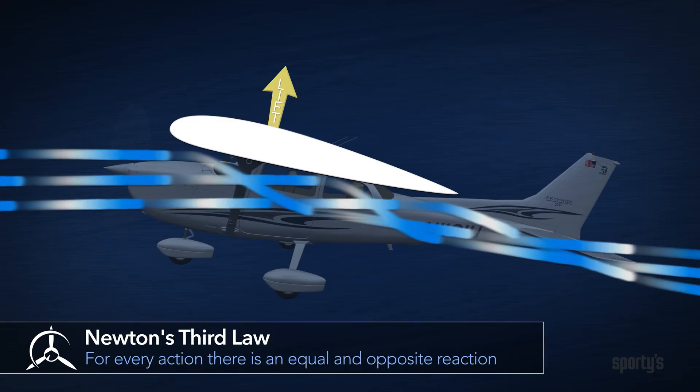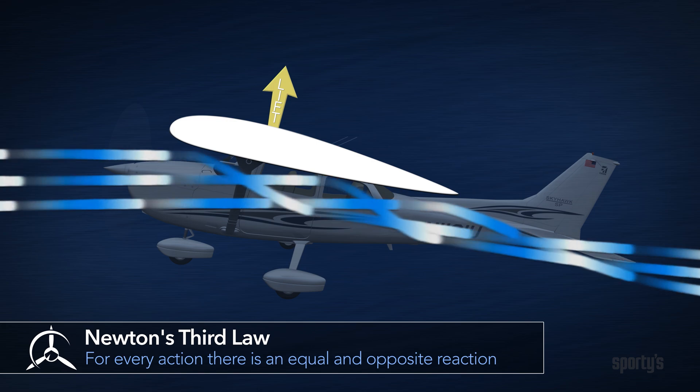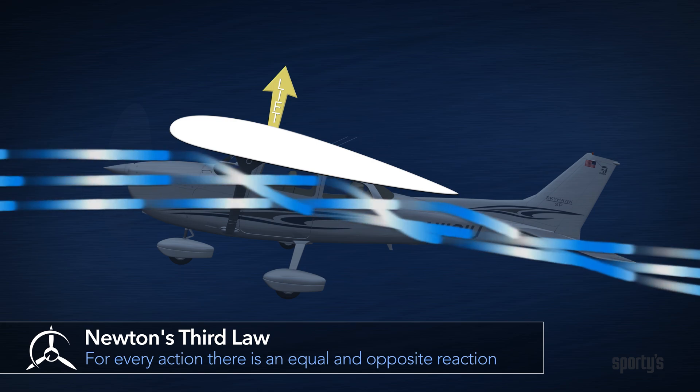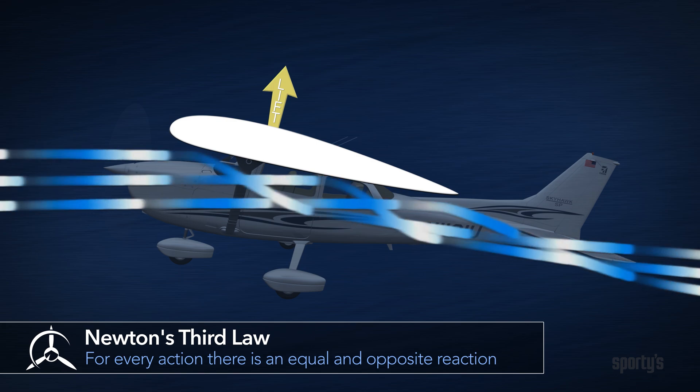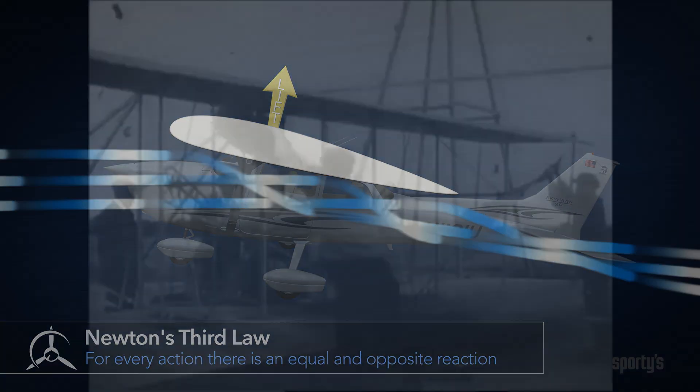The increased pressure below the wing is a working model of the concept of action-reaction, which is credited to Sir Isaac Newton.